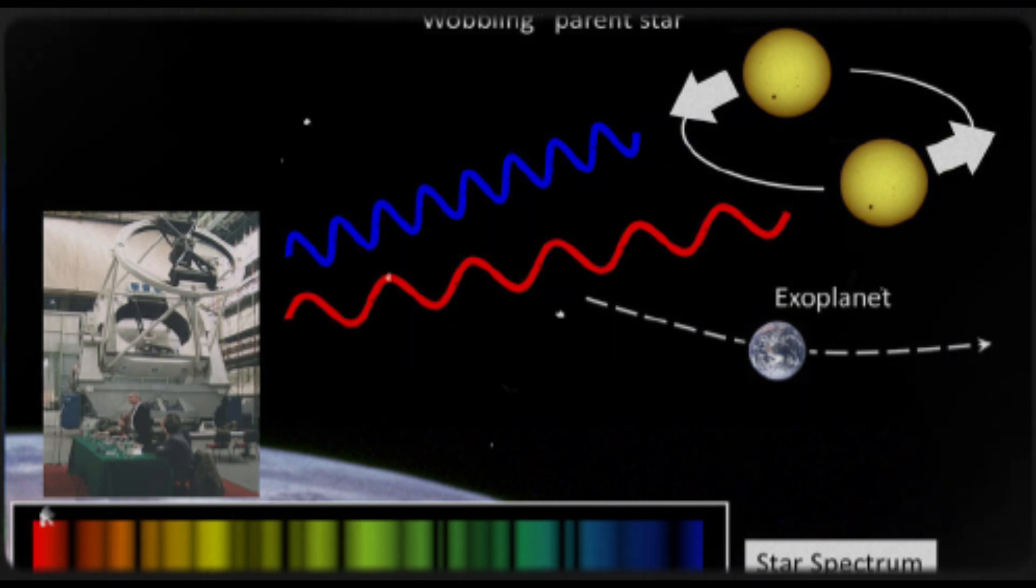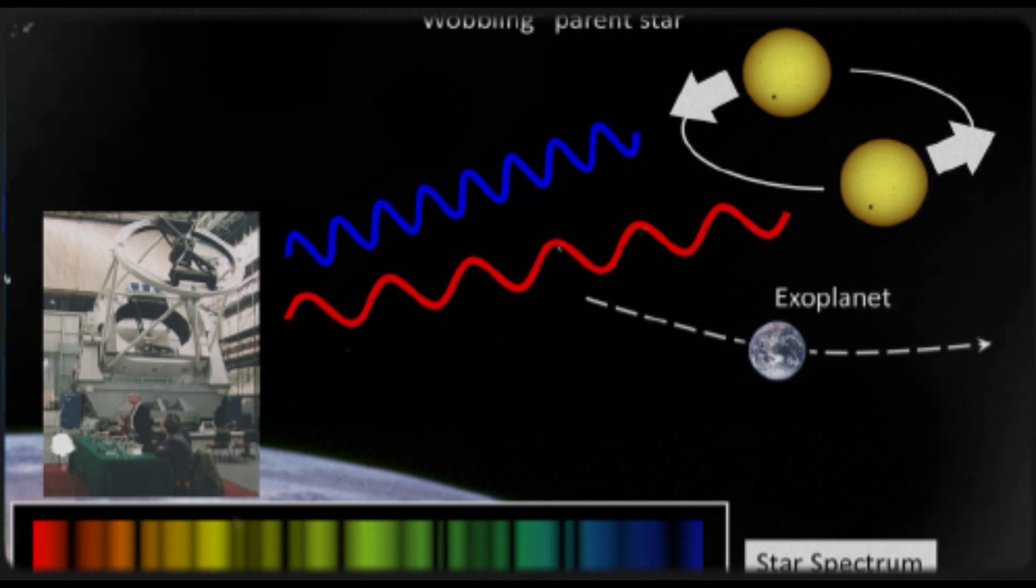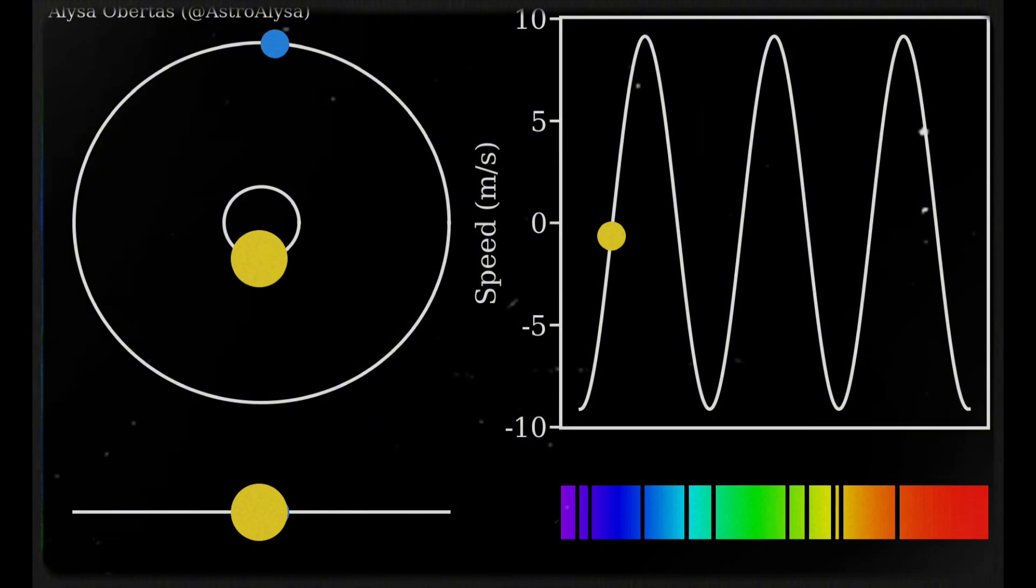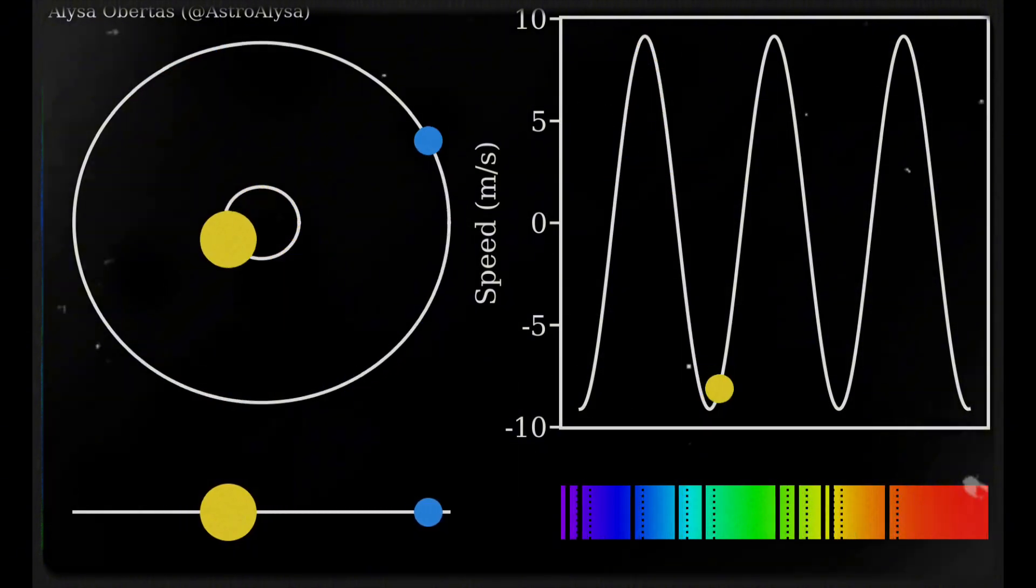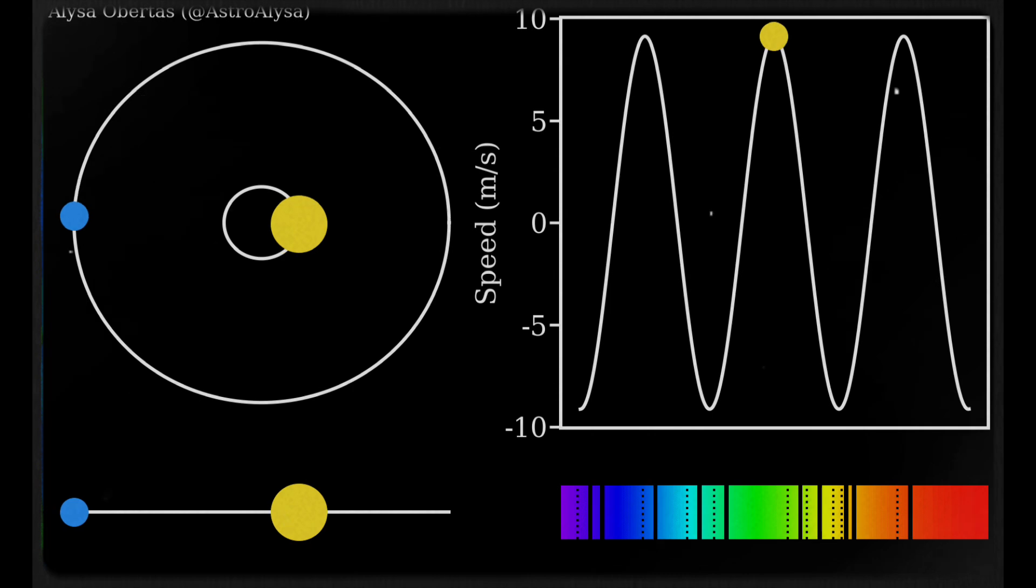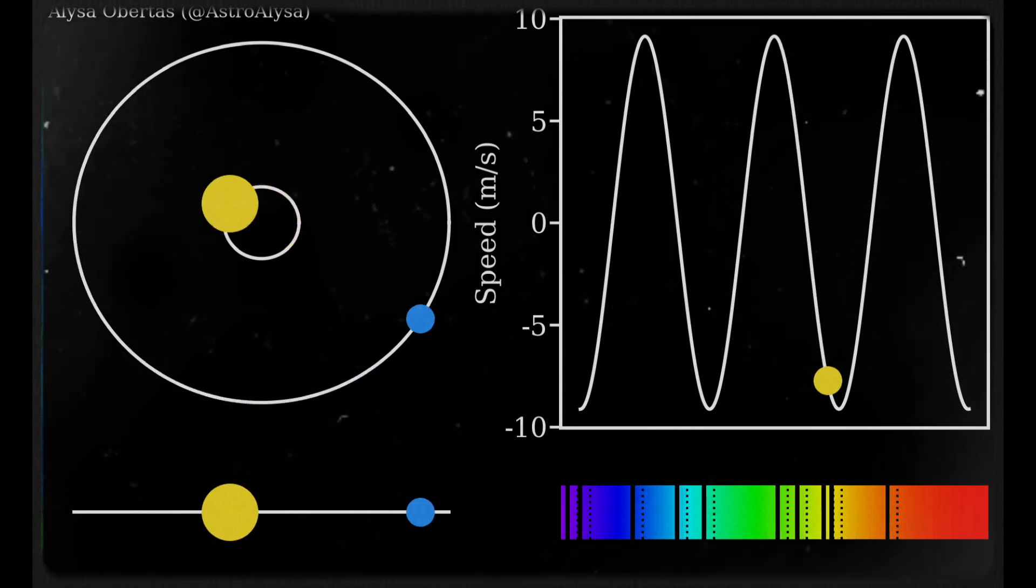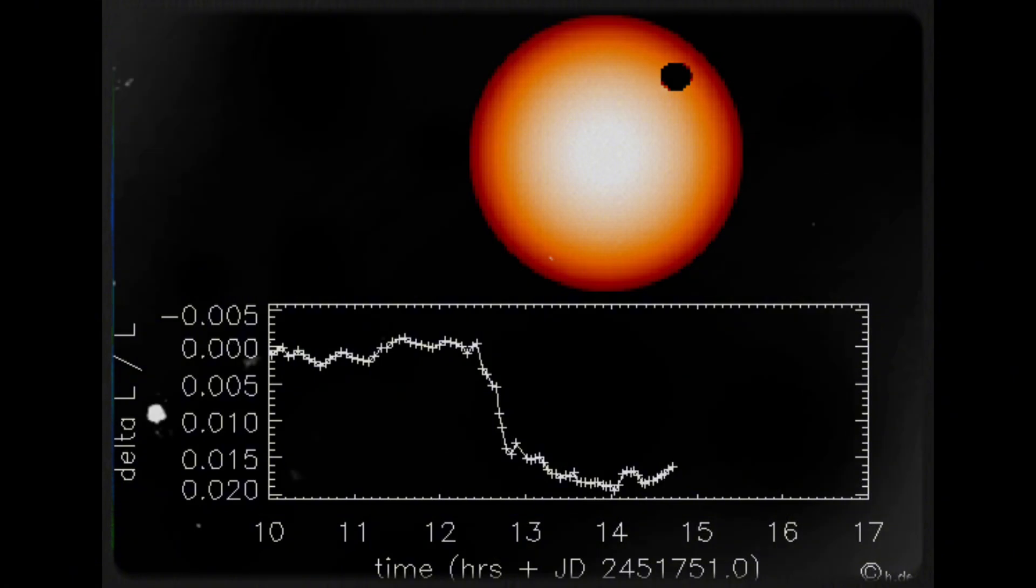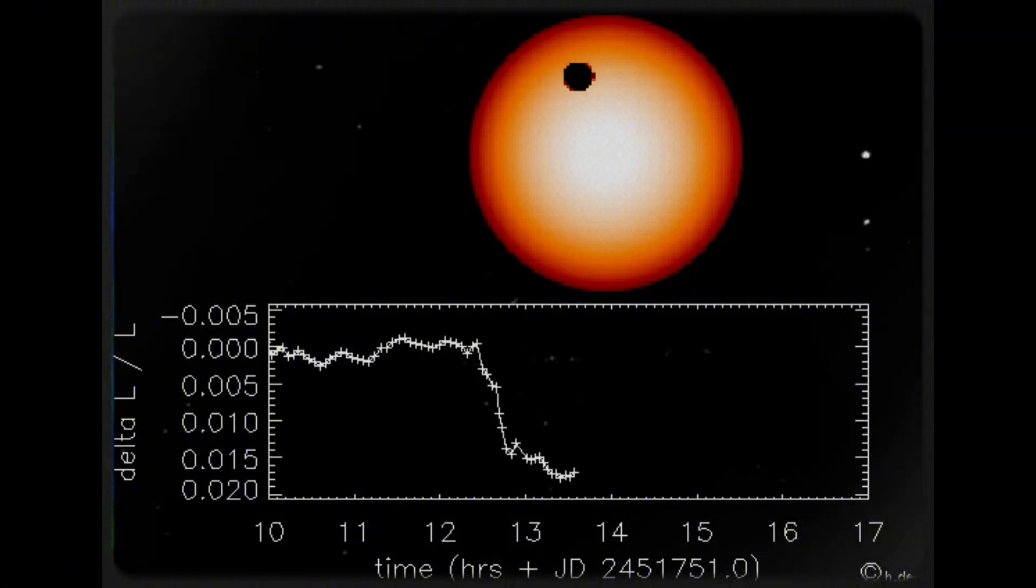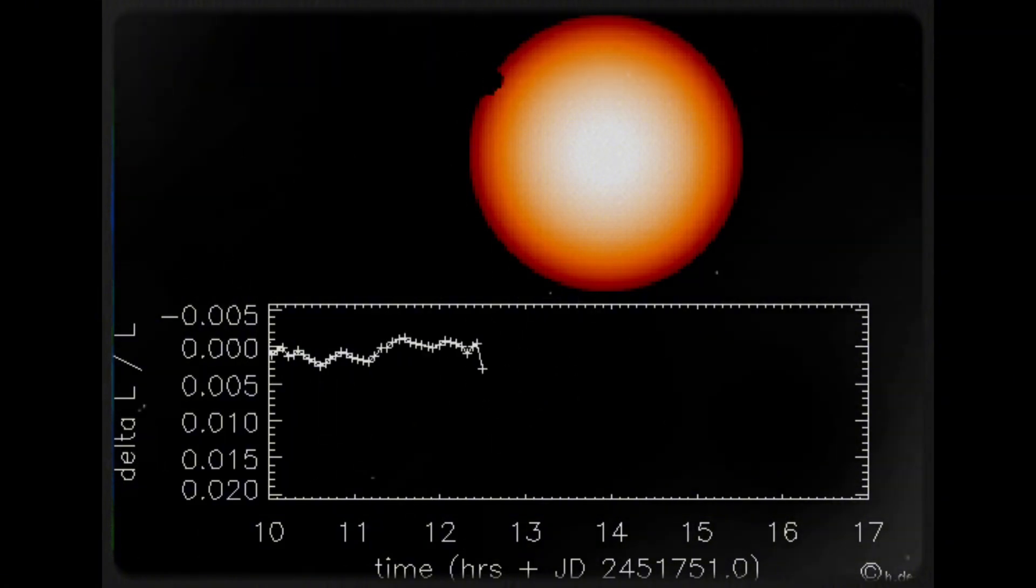A star does not remain completely stationary when being orbited by planets. Due to the gravitational pull from orbiting planets, the star moves in a slight wobble. Researchers use extremely sensitive spectrographs to monitor the light spectrum from the star. When a planet pulls the star closer, its light appears slightly blue-shifted, while it appears slightly red-shifted when moving away.